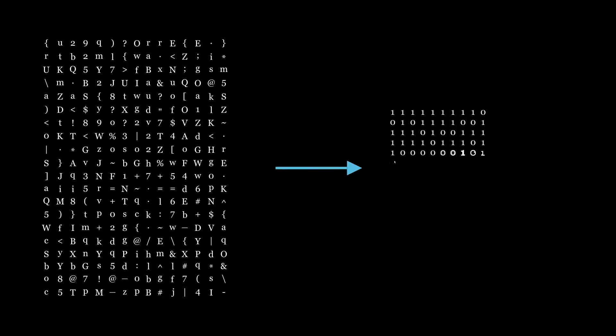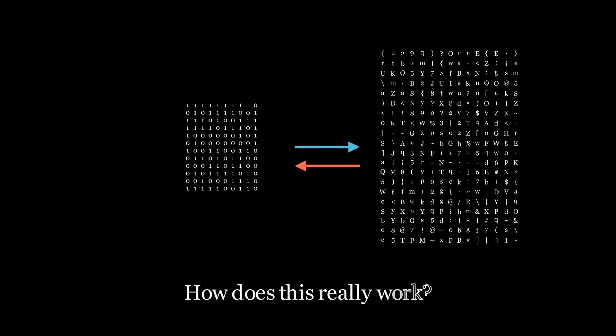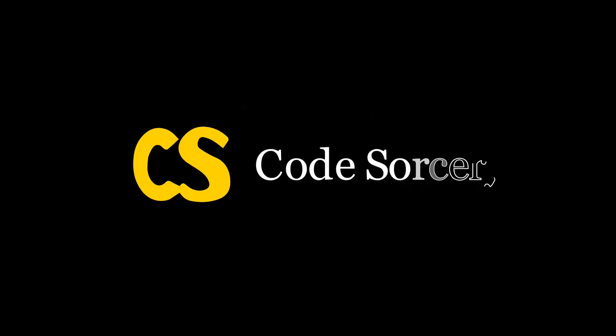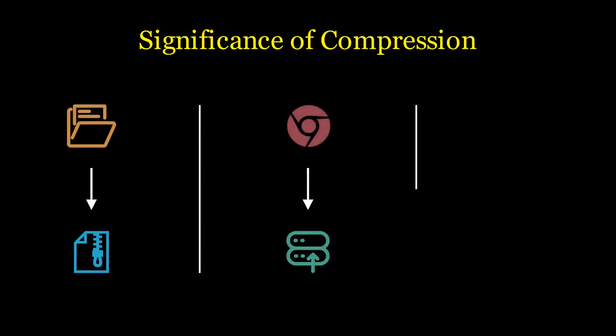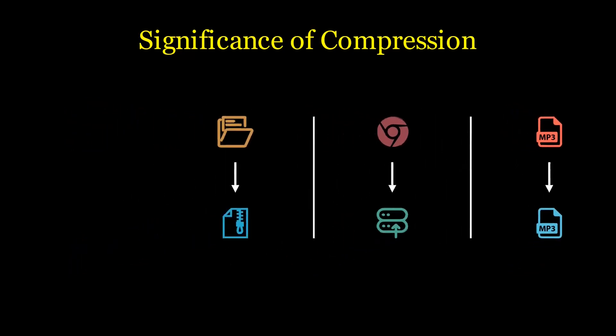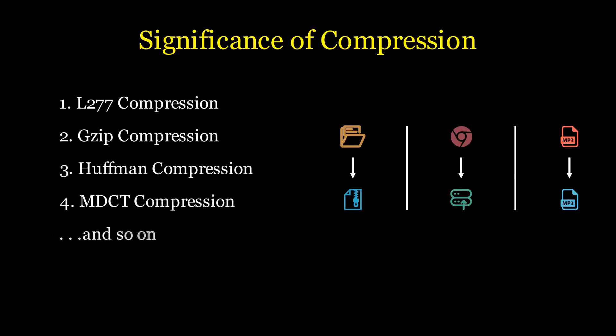It's amazing how we can take a blob of data, compress it, and perfectly retrieve it back. But how does it really work? Data compression is integral to many applications, whether it's compressing a folder to a zip file, sending some payload from client to server, or lossy compression of an audio file. Many kinds of compression mechanisms exist, but for this video we will dive into Huffman's algorithm.